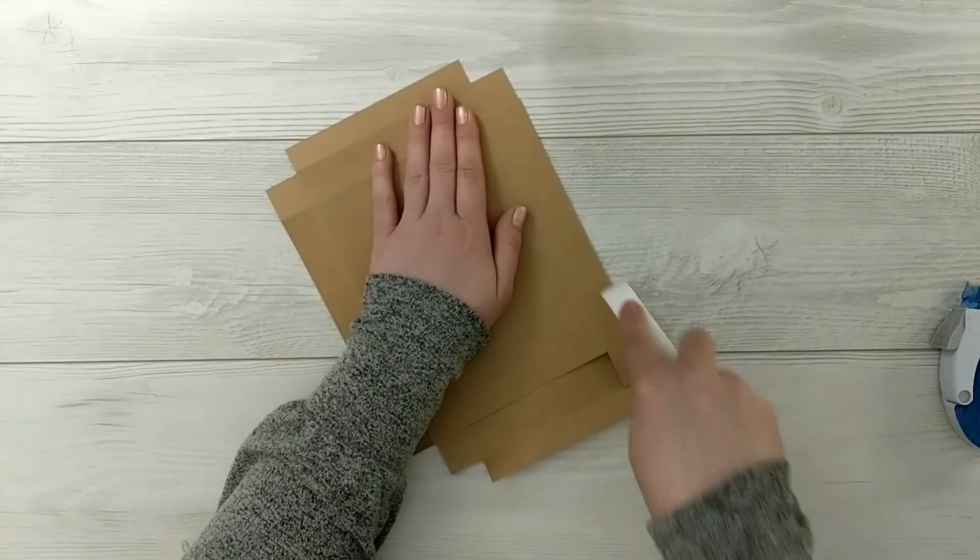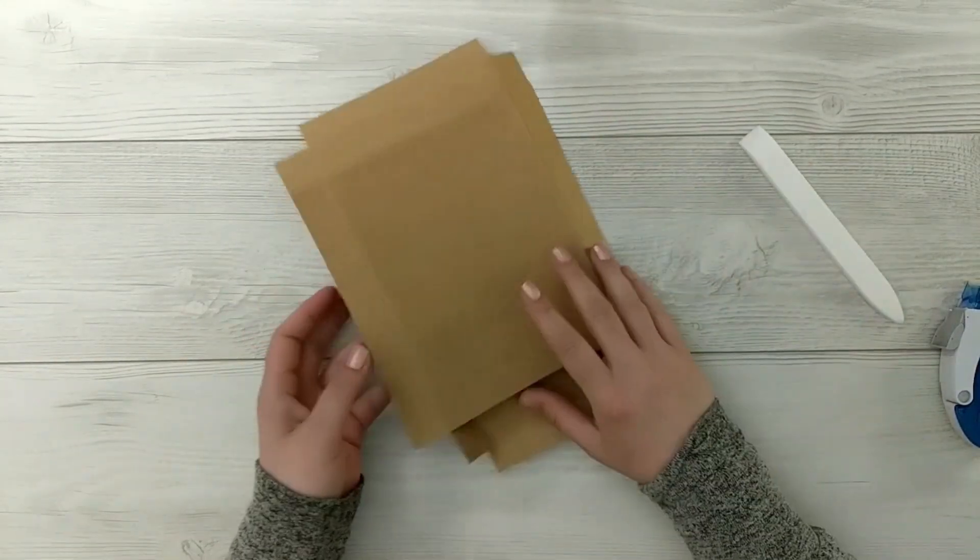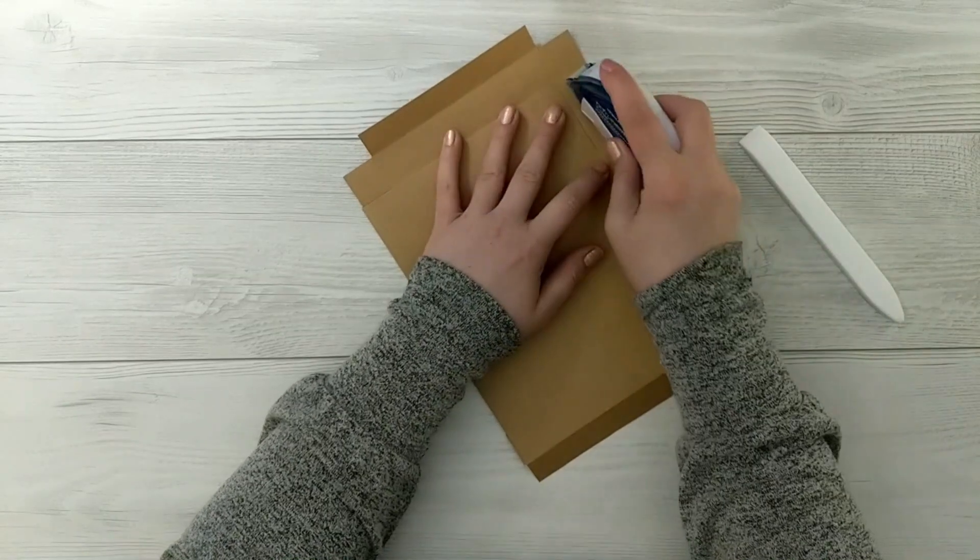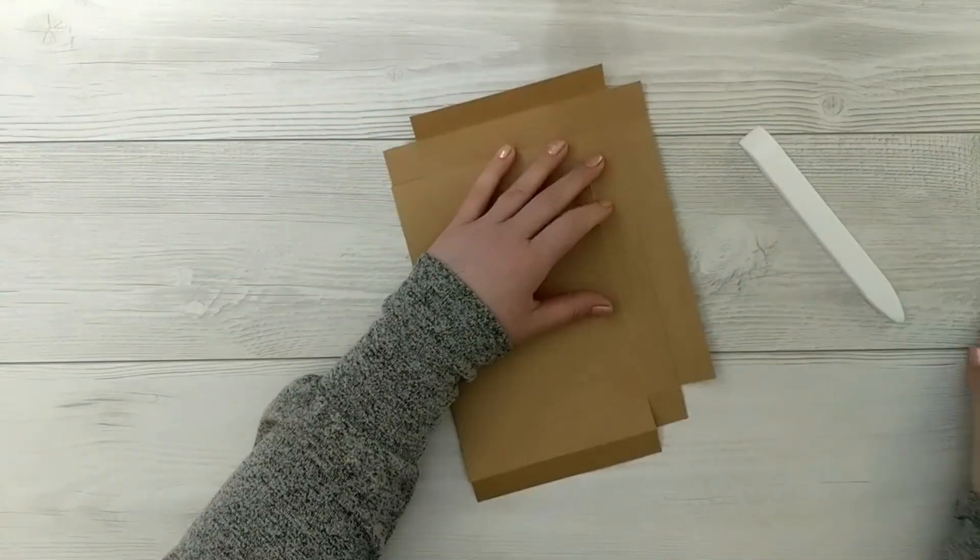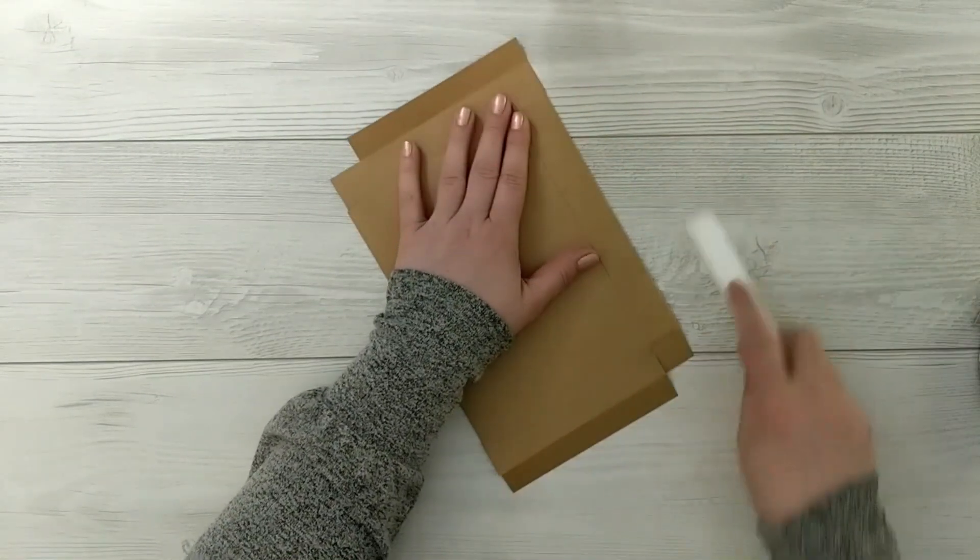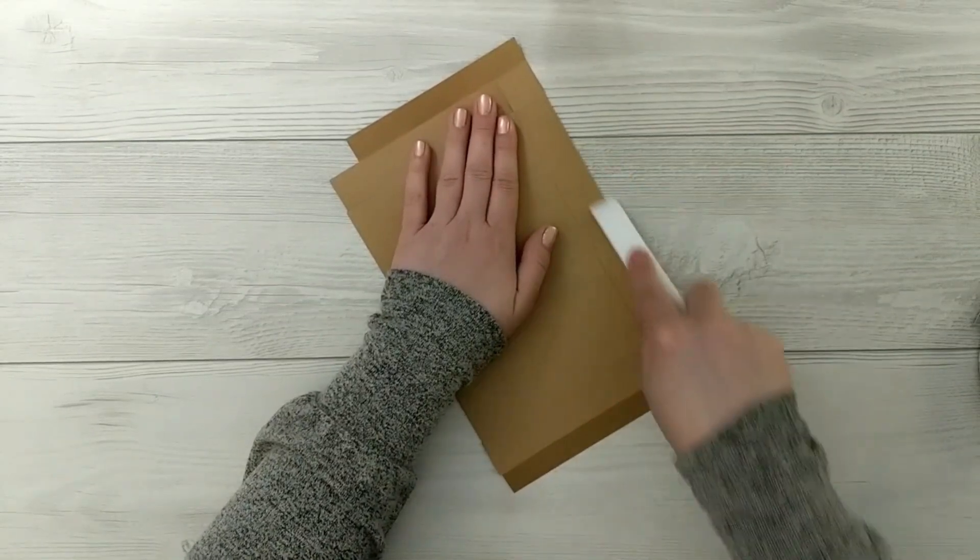Now this is in case you want to create boxes ahead of time and they'll stay nice and flat until you're ready to use them. When you're ready to make them, add some adhesive to those flaps and burnish them down and it'll make the box a bit stronger.